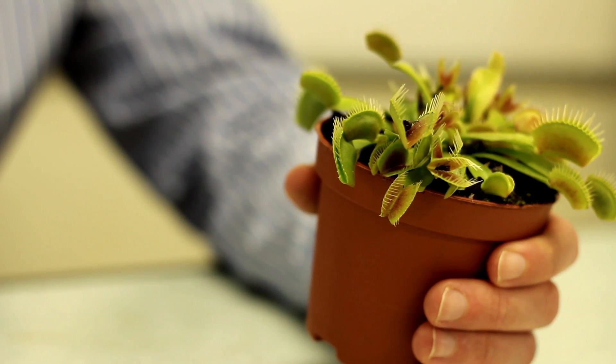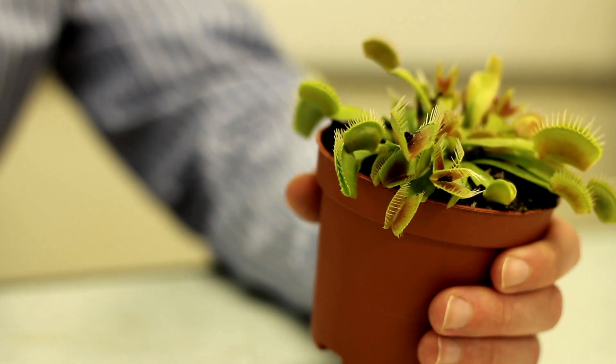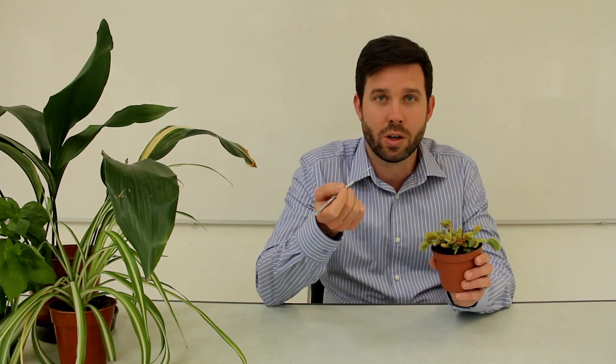The Venus Flytrap has a particularly extreme adaptation where it's modified its leaf into these traps which close and trap flies. The investigation is all about working out if these plants can count and how they sense the flies in the trap.